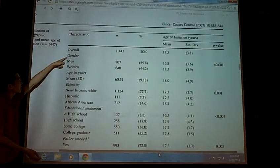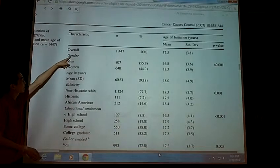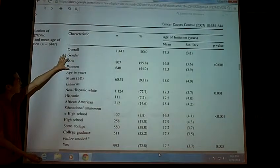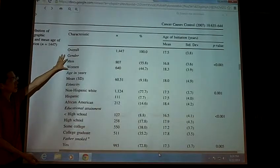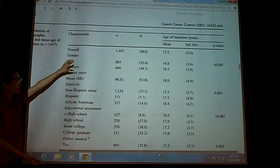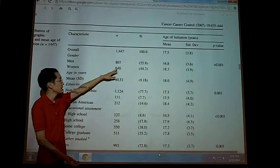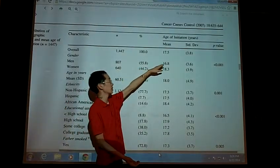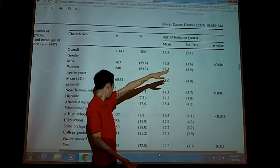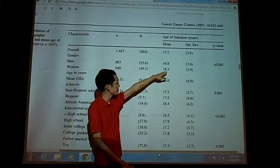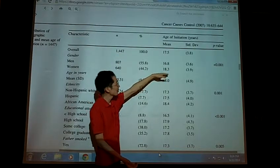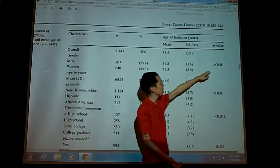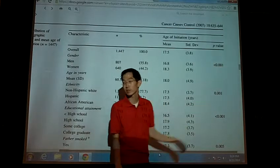So, anyway. You see these italicized things that says gender. Okay. Men and women. Okay. So, so this, they just did a T-test. So, there's two groups, 807 men, 640 women. The average age that men started smoking was 16.8. Average age where women started smoking was 18.3. And that difference has a p-value of less than 1 in 1,000.